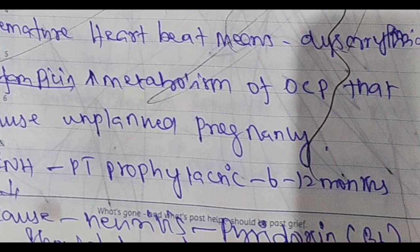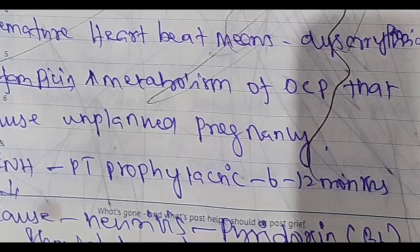Rifampicin — so rifampicin increases the metabolism of oral contraceptive pills, leading to unplanned pregnancy. Note: rifampicin increases metabolism of oral contraceptive pills, and this drug interaction causes unplanned pregnancy.